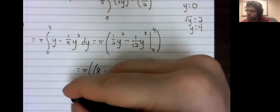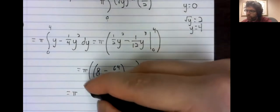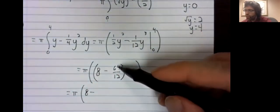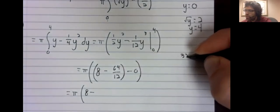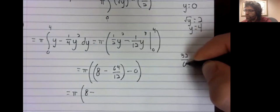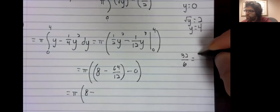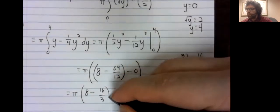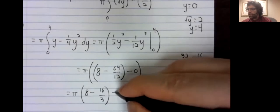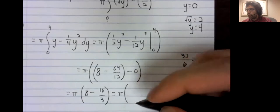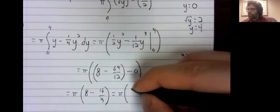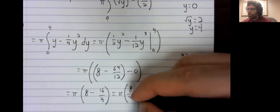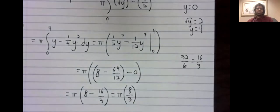And now I suppose we could do a bit of simplification. 64 twelfths should be 32 sixths, or 16 thirds. 8 is 24 thirds, so 24 thirds minus 16 thirds is 8 thirds. And you could plug that into a calculator to get a decimal or leave it as is. I will leave it as is.